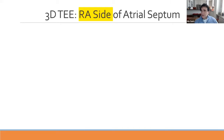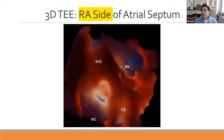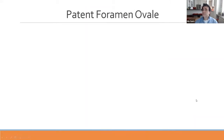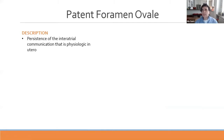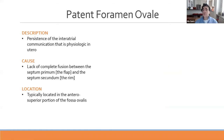Let's look at the atrial septal anatomy. On 3D TEE, this is the right atrial side of the atrial septum showing the fossa ovalis along with the superior vena cava, inferior vena cava, coronary sinus, and parts of the aortic valve. The patent foramen ovale is located in the supero-anterior portion of the fossa ovalis. The fossa ovalis is quite thin relative to the rest of the septum on transillumination. Patent foramen ovale is a persistent atrial communication that is physiologic in utero, caused by lack of complete fusion between the septum primum (the flap) and the septum secundum (the rim), with a prevalence of about 25% of the adult population.